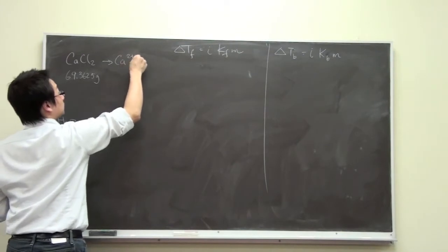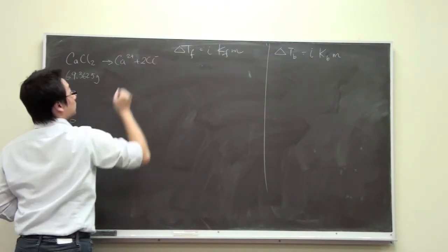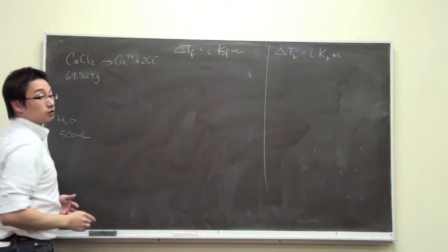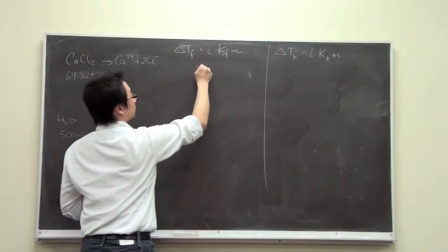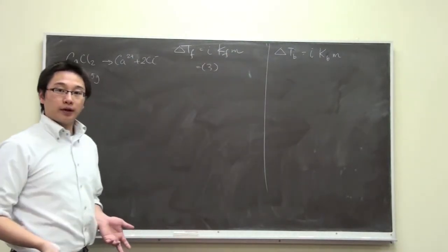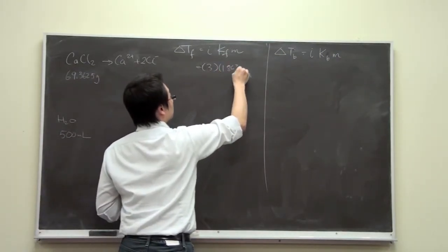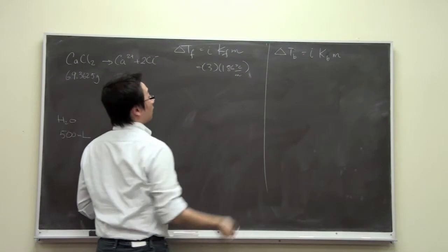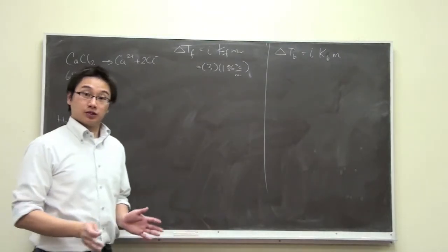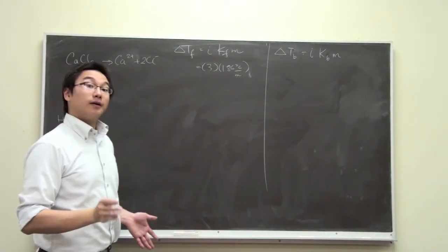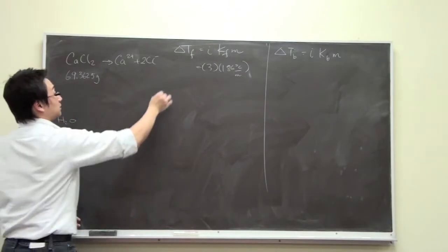One, two, three. So the i would be three. The freezing point constant is 1.86 degrees Celsius per molal. Now what is missing is our molality. So we have to calculate the molality first.